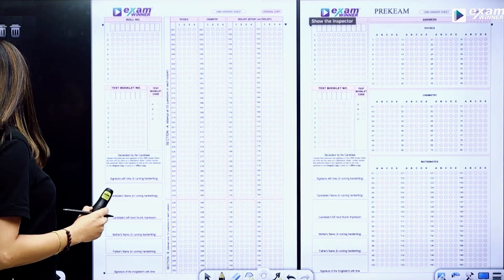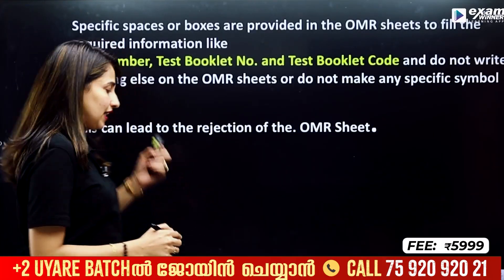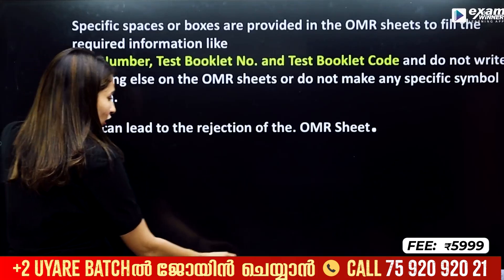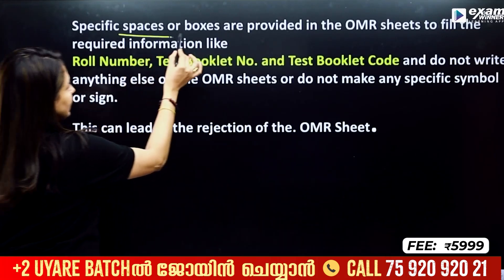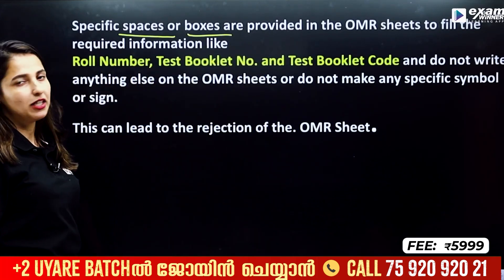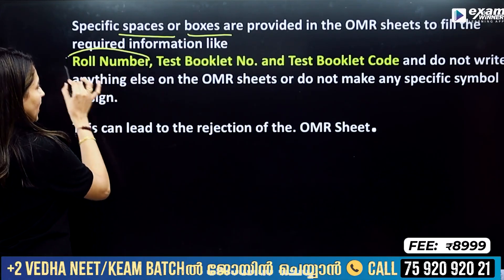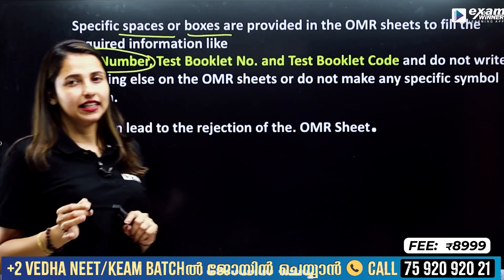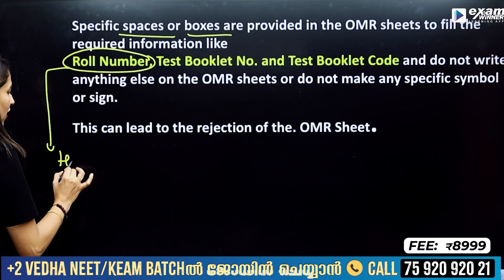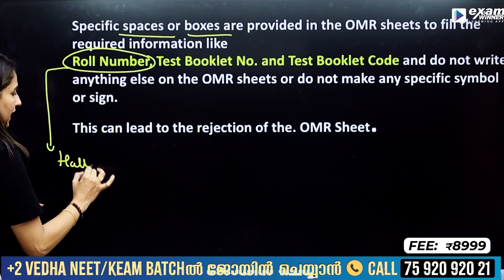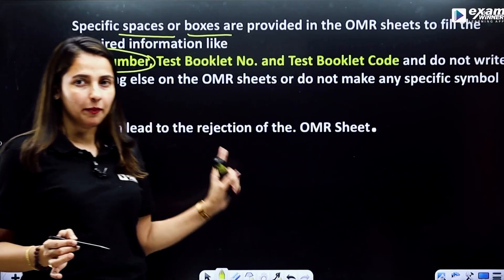Let me start with the separate papers. The first thing you can do is fill in the OMR sheet — I will tell you how to fill it. What is this? Roll number. This roll number is in our hall ticket. If you have a hall ticket, you can print that hall ticket. In that hall ticket, you have a roll number.